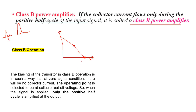The biasing of the transistor in Class B operation is such that at zero signal condition — meaning we are not applying any signal to the input — there will be no collector current. The operating point is selected to be at the collector cutoff voltage. When the signal is applied, only the positive half cycle is amplified at the output.